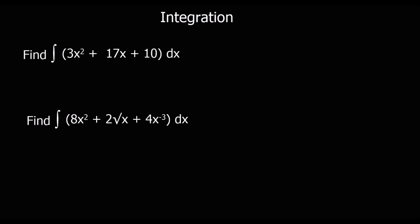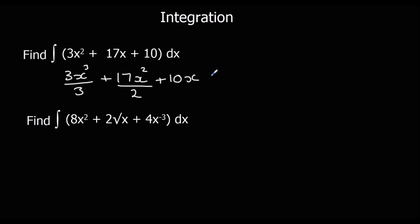Here are another few — pause the video and give them a go. So integrating: add 1 to the power, divide by the new power, and plus c on the end. 2 plus 1 is 3, divide by 3. x¹ goes to x², divide by 2. 10 goes to 10x, and we plus c. 3 over 3 cancels so we just get x³, plus 17 over 2 x², plus 10x, plus c.